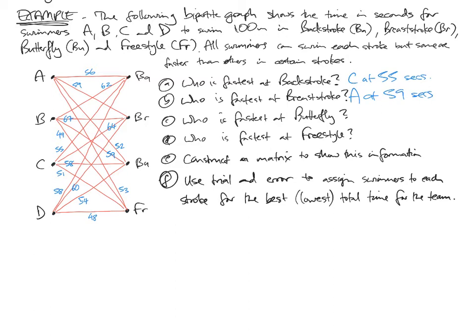Looking at this node, who's the fastest at butterfly? So I'm looking at this node here. A is 52, B is 59, C is 58, D is 54. So A is once again the fastest. A at 52 seconds.